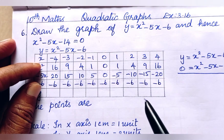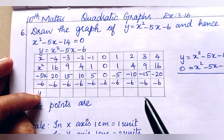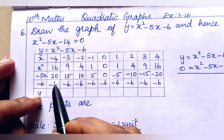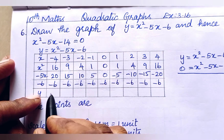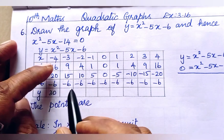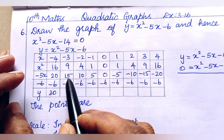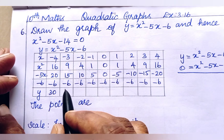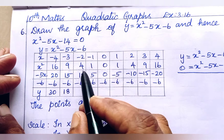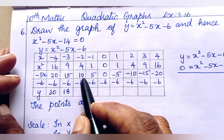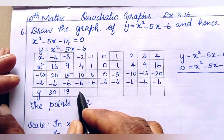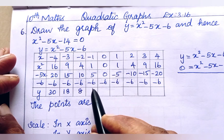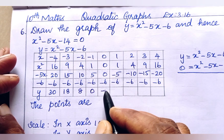Minus 6 goes in all the boxes. Now we add all three rows to get y. For x equals minus 4: 16 plus 20 minus 6 gives 30. For x equals minus 3: 9 plus 15 minus 6 gives 18. For x equals minus 2: 4 plus 10 minus 6 gives 8. For x equals minus 1: 1 plus 5 minus 6 gives 0.